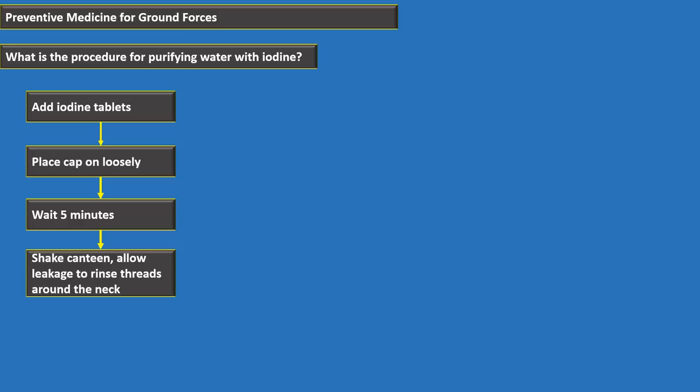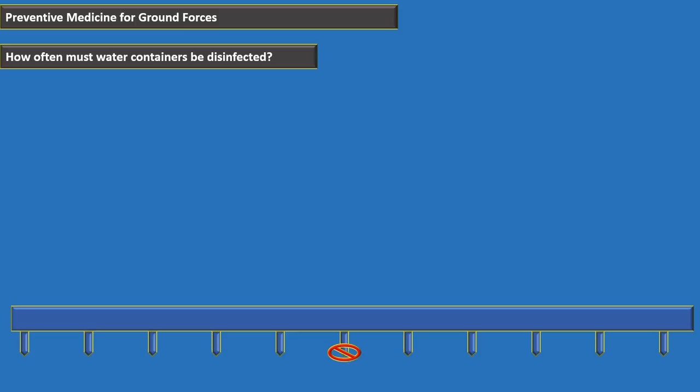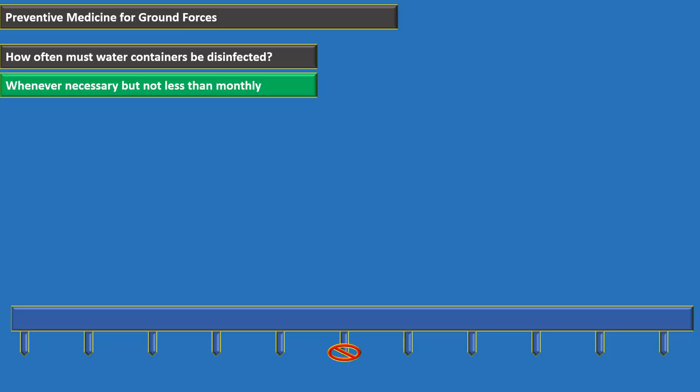When using boiling to disinfect water, bring it to a rolling boil for at least two minutes. Water containers must be disinfected whenever necessary but not less than monthly. Free available chlorine is tested daily.